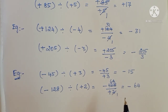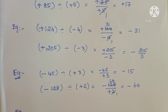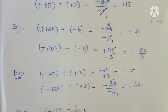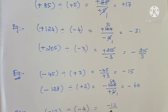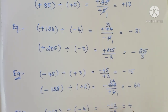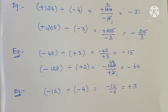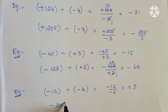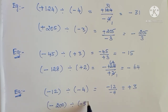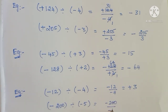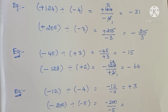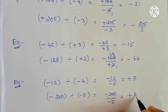Now, see the next and last concept — negative by negative. That means we take a negative integer and divide by a negative integer. Minus 12 divided by minus 4. We can write minus 12 by minus 4. So, minus by minus is plus — 12 by 4 is 3. So the answer is plus 3. One more sum: minus 200 divided by minus 5. Negative by negative — what will you get? Positive. 200 by 5 is 40. So the answer is plus 40.